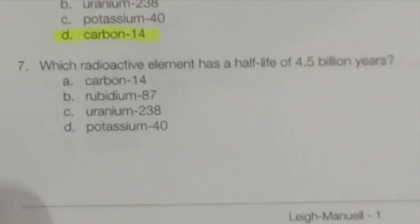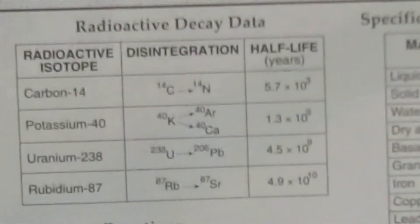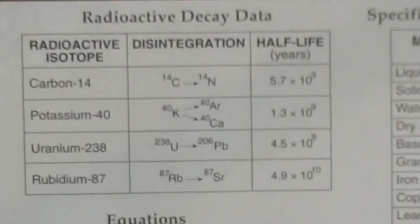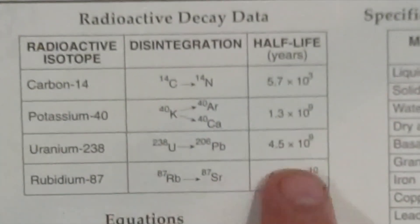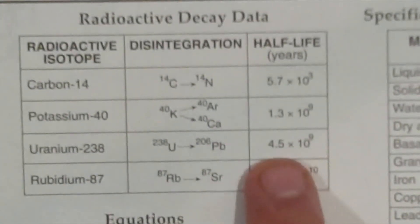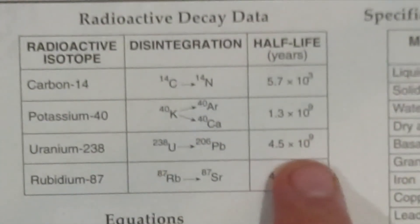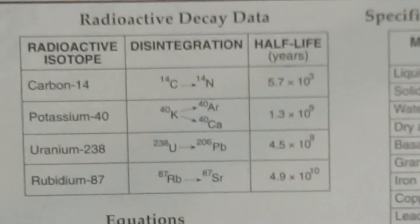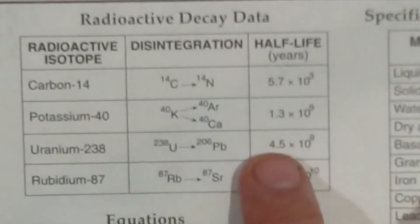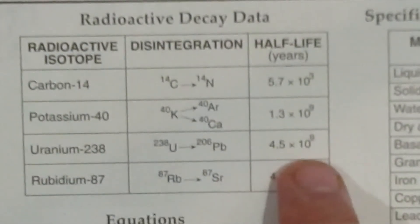Which radioactive element has a half-life of 4.5 billion years? On the Earth Science Reference Table, uranium is listed as having a half-life of 4.5 × 10⁹ years, which is 4.5 billion years.